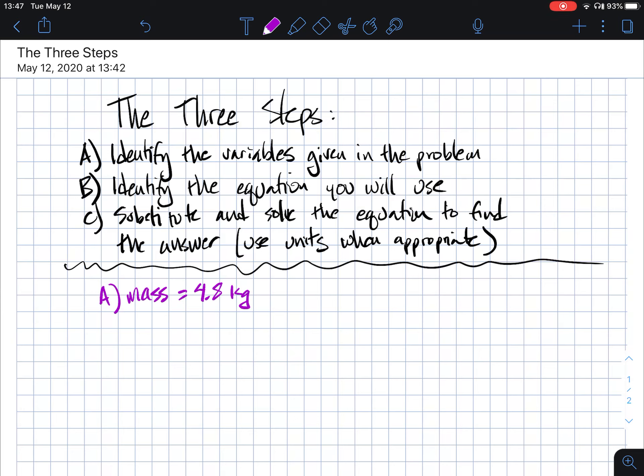You'd write the variable name or letter and then equals and then the number with units, so that it's really clear that you know which information you're being given in the problem. The other information that we had in that problem was that the velocity was 7.6 meters per second. So we would include that information as well.